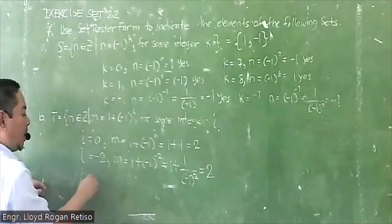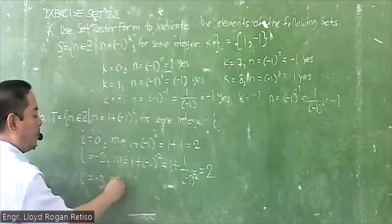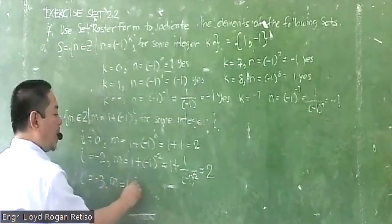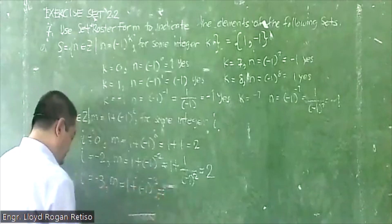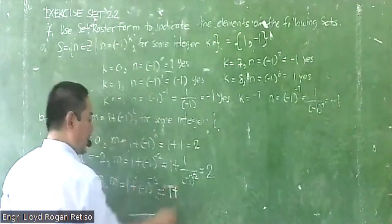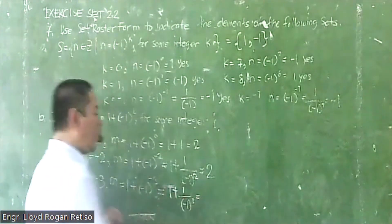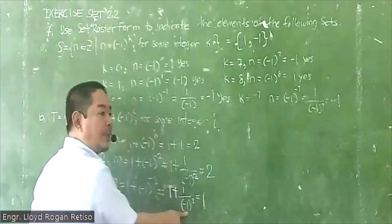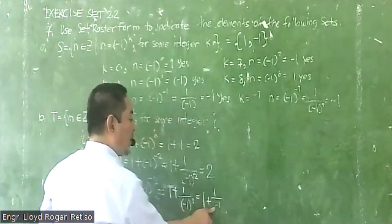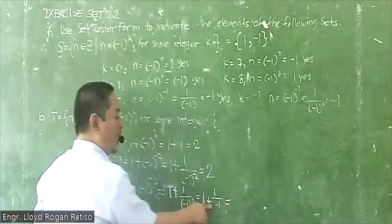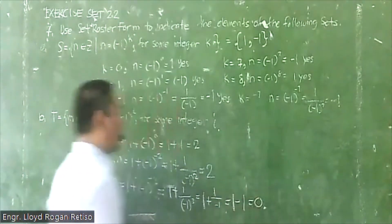Let i equals negative 3. So m equals 1 plus (-1)^(-3), that will be 1 plus 1 over (-1)^3. Since (-1) times (-1) times (-1) is negative 1, that gives 1 over negative 1, which is negative 1. So m equals 1 plus negative 1, that will be 0.